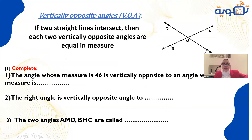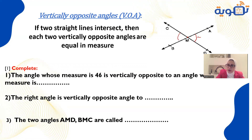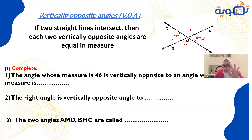Vertically opposite angles: when two straight lines intersect at one point, they create two pairs of vertically opposite angles. These are opposite each other and are equally measured. To read an angle, use three letters with the vertex in the middle. So the measurement of angle AMC equals the measurement of angle BMD.